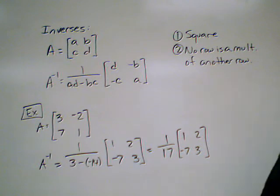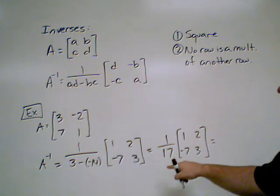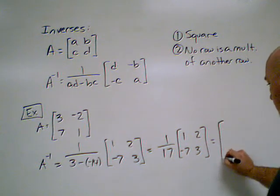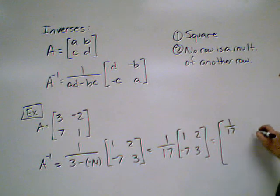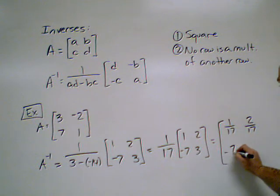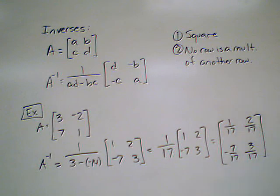Now it's a scalar multiplication problem. We multiply each element in here by our scalar, and we're going to get a bunch of fractions. We get 1 over 17, 2 over 17, negative 7 over 17, and 3 over 17. I know that looks hideous, but that's okay. This is the correct answer.